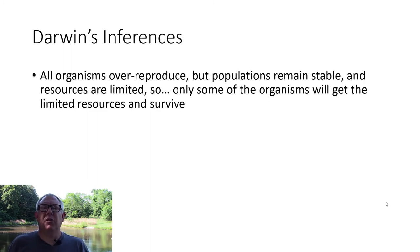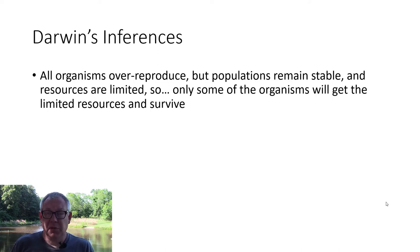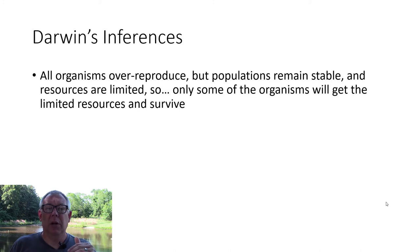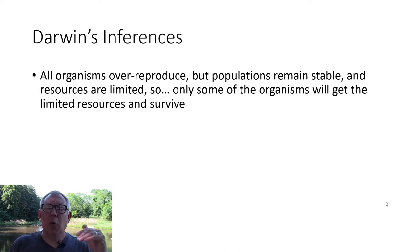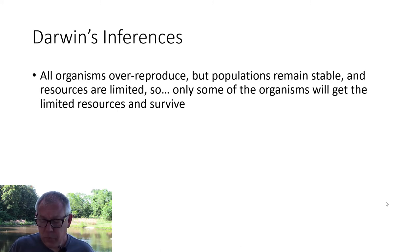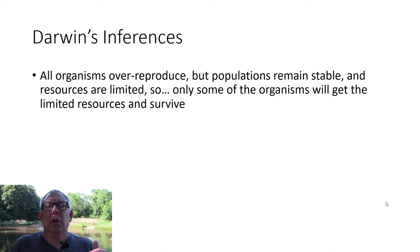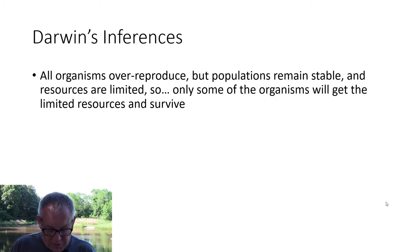From those observations, Darwin drew an inference. All organisms over-reproduce, but populations remain stable and resources are limited. So you can infer that only some organisms get those limited resources and survive. Since populations don't grow exponentially, most organisms that are born die before they can reproduce. You've got so many babies born — most of them are going to die. Only those able to get the limited resource are the ones that will survive.